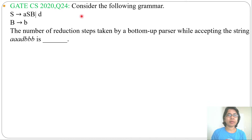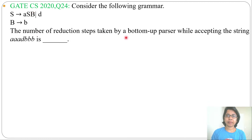Hi, let's solve one previous question on parsing. This question was asked in GATE CS 2020, question number 24. Consider the following grammar — one grammar is given. The number of reduction steps taken by a bottom-up parser while accepting the string AADBBB is dash.